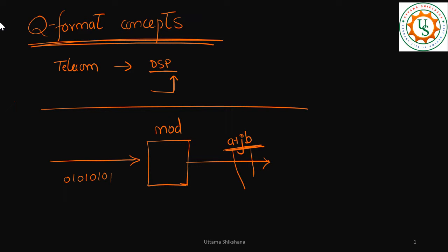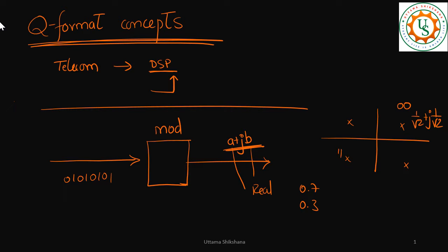After the modulation block, as per the mapping, we get complex numbers where A and B are real numbers — something like 0.7, 0.3. For example, in QPSK, if the incoming bits are '00' we map to (1/√2) + j(1/√2), and if '11' it maps to (1/√2) − j(1/√2). This value is approximately 0.7071. After this there could be many other blocks requiring multiplication and addition operations.